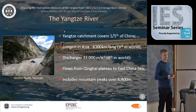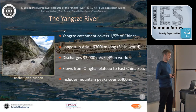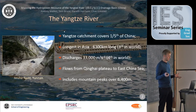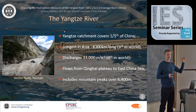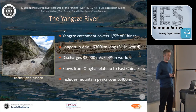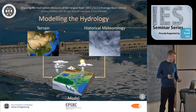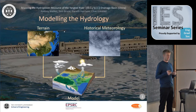The Yangtze River itself covers a catchment area of a fifth of China, which is about 10 million kilometers squared. It's the longest river in Asia at 6,300 kilometers long, the third longest river in the world, discharges 33,000 meters cubed per second — the fourth most powerful river in the world — and flows from the Qinghai Plateau bordering Tibet down to the East China Sea, with mountain peaks over 6,400 meters.